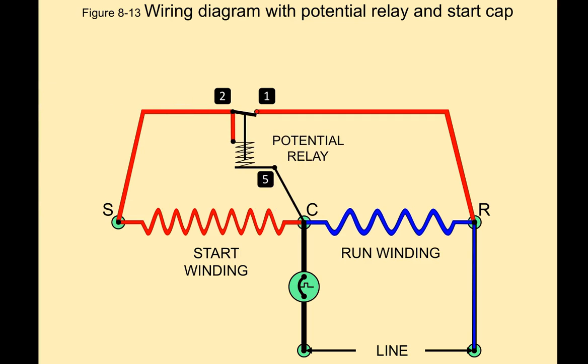So let's pop a potential relay into the circuit now with a start capacitor. When we start the compressor and apply power to the compressor, the potential relay's contacts are normally closed. If we follow our schematic diagram, we have our incoming voltage comes through here, through the start capacitor, through the normally closed contacts, back down through the start windings, back to common.